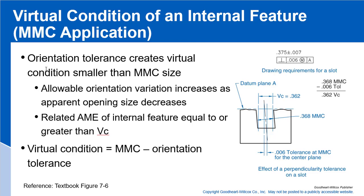The allowable variation increases as apparent opening size decreases. The actual mating envelope of an internal feature must be equal to or greater than the virtual condition. So the virtual condition here is the MMC minus the orientation tolerance, giving us 362. This establishes the effective tolerance at MMC for the center plane.